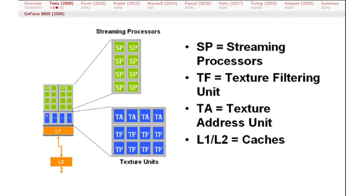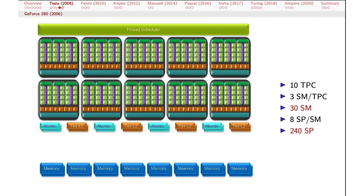Zooming into one streaming multiprocessor — just one chunk of the TPC — it's got streaming processors inside of it, and other units dealing with graphics-specific things like texture maps. Another release in the second generation of Tesla chips was the GeForce 280, also in 2006 — a somewhat more capable chip. We've got 10 TPCs, each of which has three streaming multiprocessors, for a total of 30 streaming multiprocessors. And each of those had eight streaming processors, for a total of 240 streaming processors.